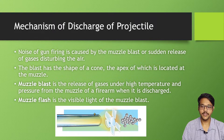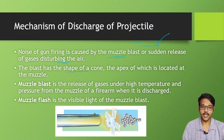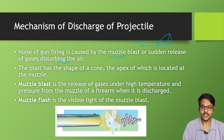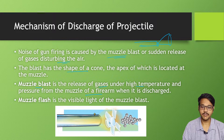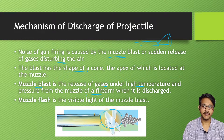When firearms are fired, there is gun noise caused by the muzzle blast — the sudden release of gases disturbing the air. The blast has the shape of a cone, the apex of which is at the base. There are two terminologies: muzzle blast, which is the release of gases under high temperature and pressure from the muzzle of the firearm when discharged; and muzzle flash, which is the visible light seen at the muzzle end.